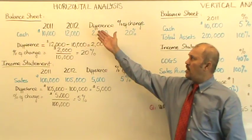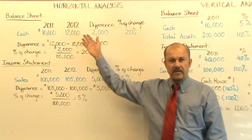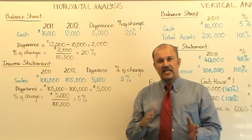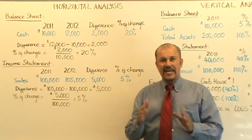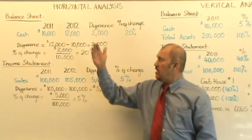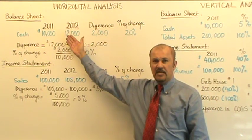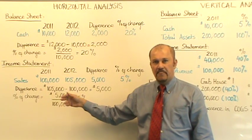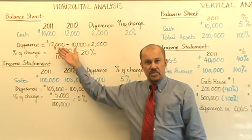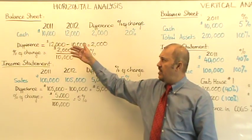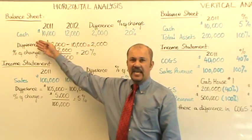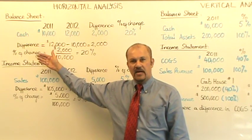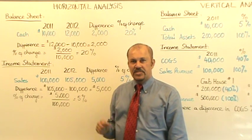We'll talk about the horizontal analysis first. The horizontal analysis can be conducted on any category in the balance sheet as well as any category on the income statement. To illustrate, I have selected cash as the balance sheet category to conduct a horizontal analysis.